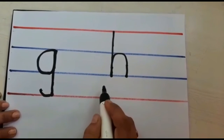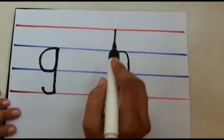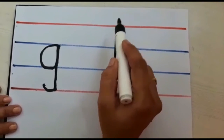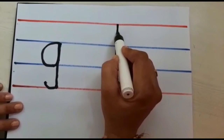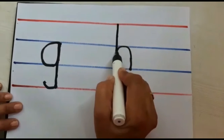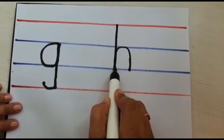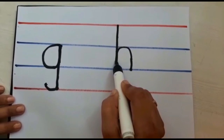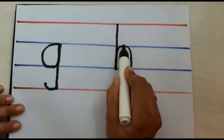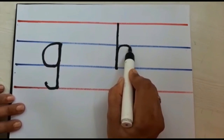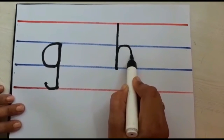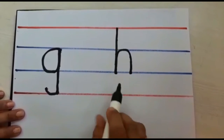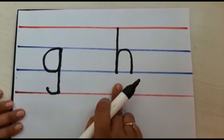See children, one more time. How to write small h? Start from the red line, the first red line. See children, make a standing line. Touch the third blue line. Go on same line. Go up. Make a curve. Touch the third blue line. This is a small h.